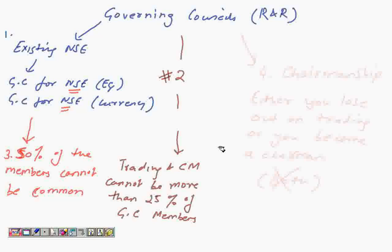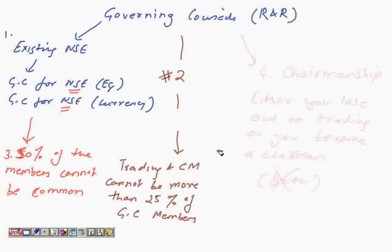So from a governing council viewpoint, these are the important points: the governing council for equity and currency segments will be different; 50% of the members cannot be common; trading and clearing members cannot be more than 25% of the governing council members; and on chairmanship, if you are a trader you lose out on trading or lose out on your chairmanship. These are four clear rules laid down for the governing council.